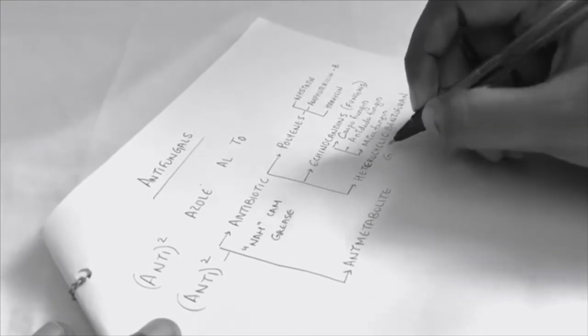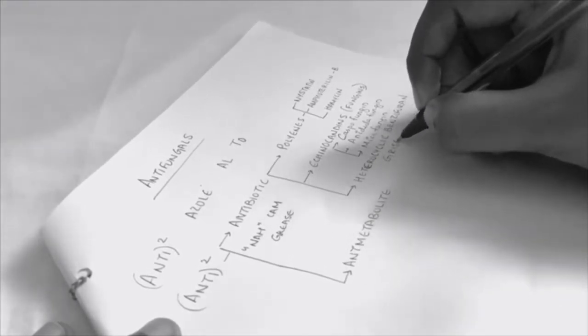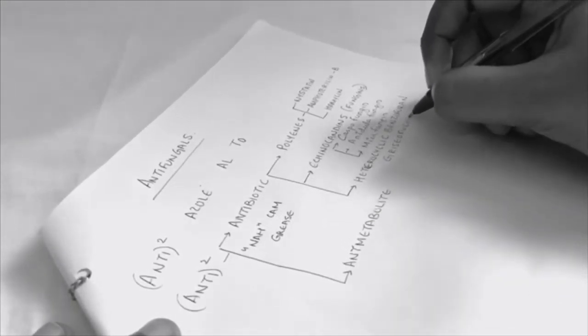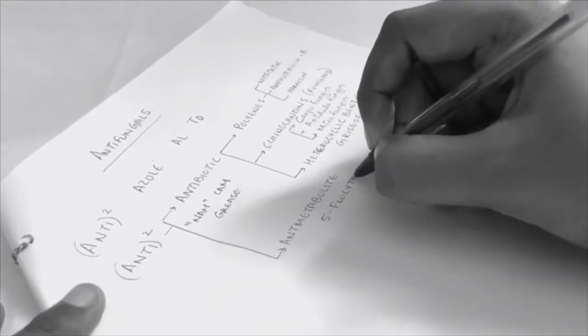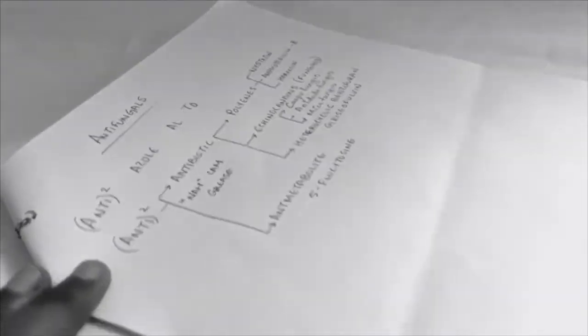Then there is heterocyclic benzofuran, which is griseofulvin. GREASE is for griseofulvin. Next are the antimetabolites, that is 5-flucytosine.